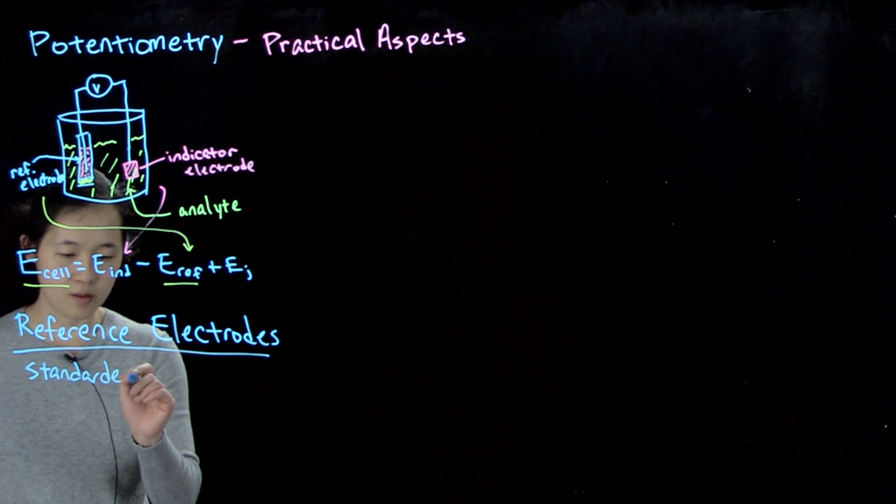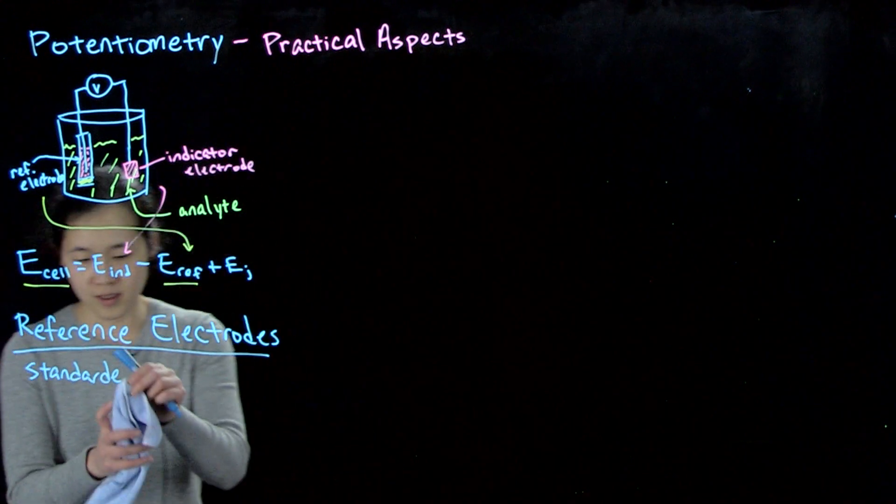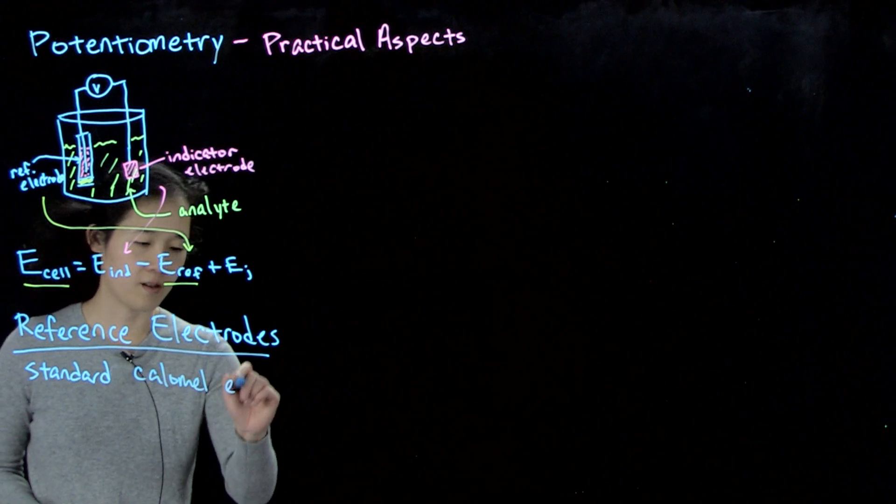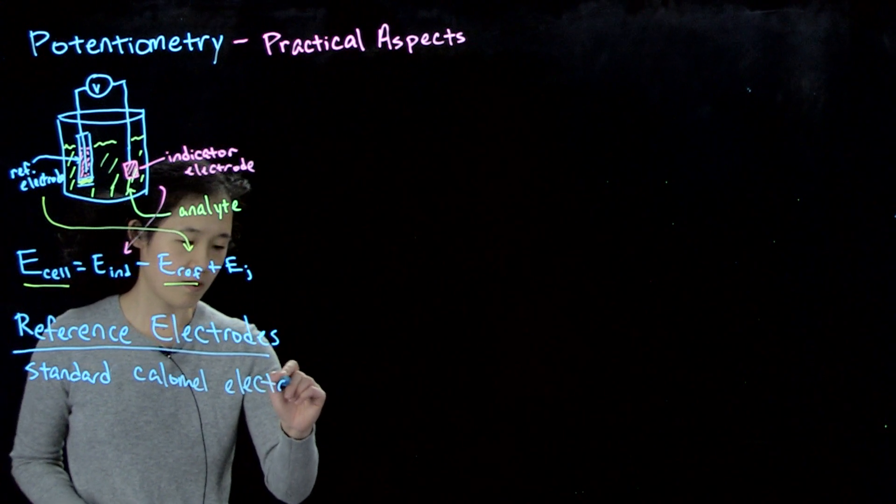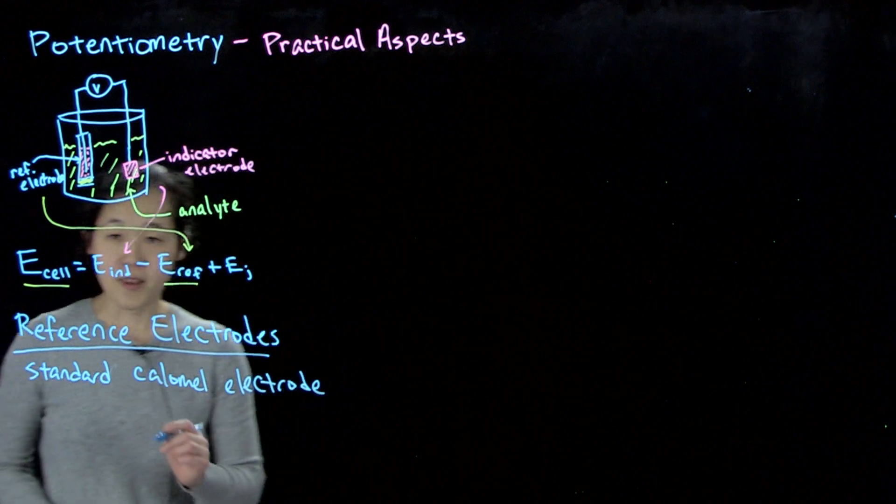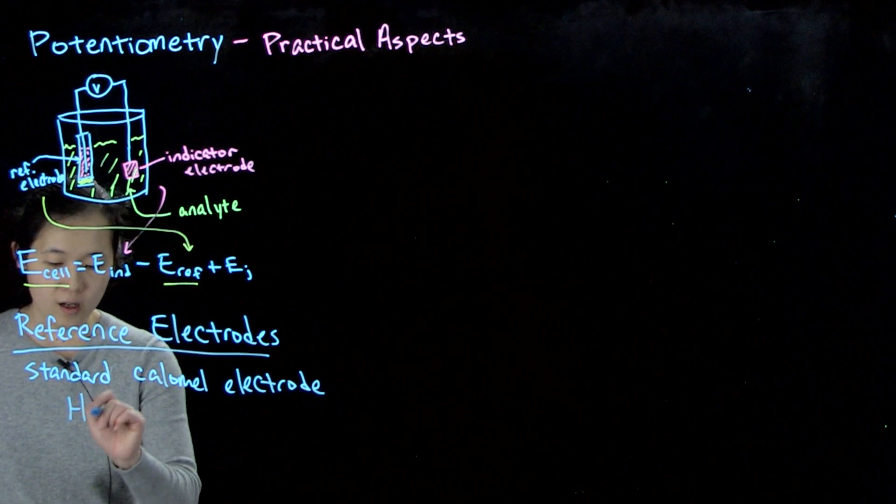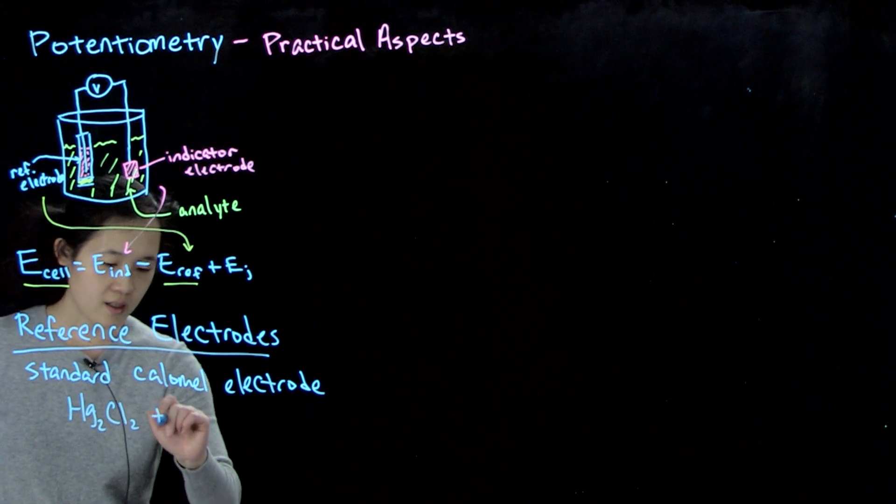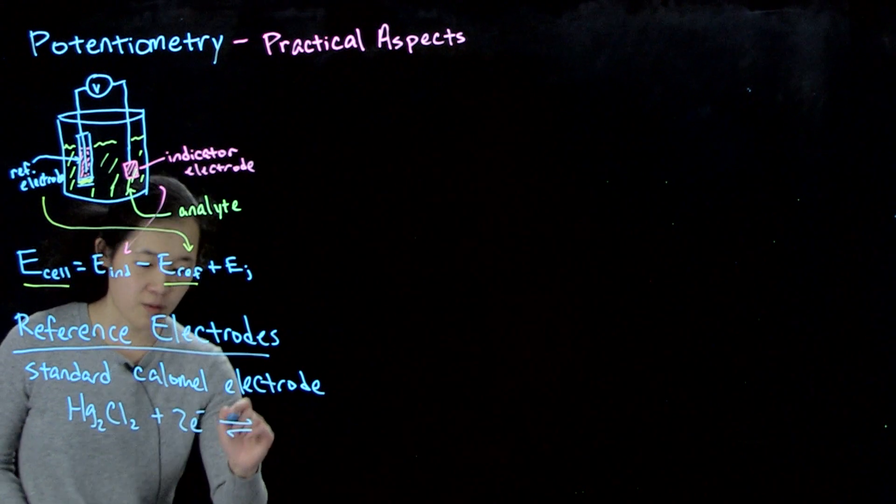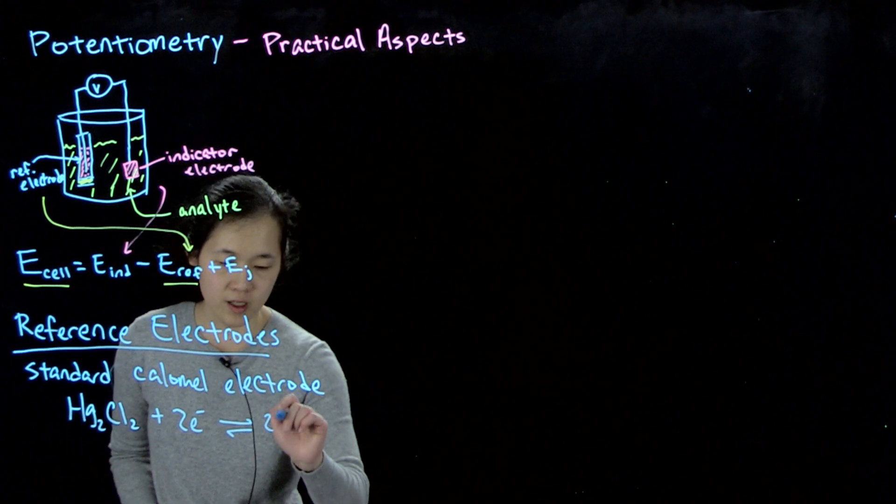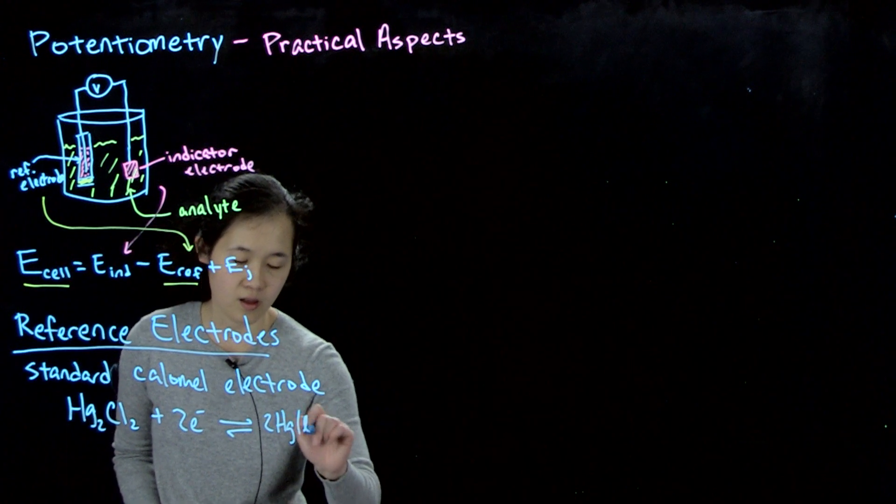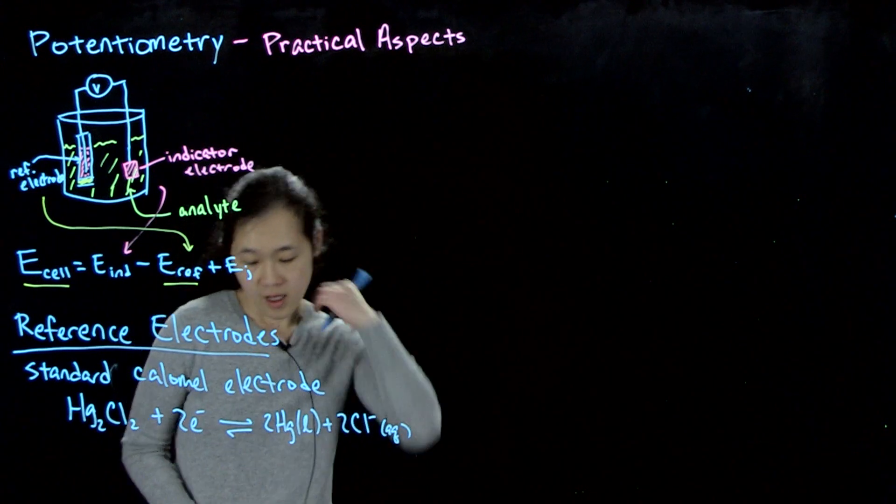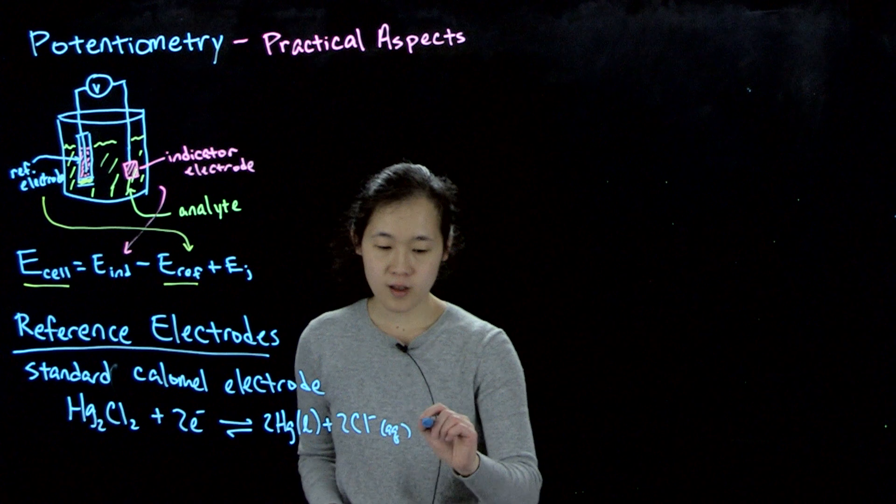So one really common one is a standard calomel electrode. And this uses mercury chloride. So if we start off with mercurous chloride, add two electrons, and then this will be in some sort of equilibrium with liquid mercury and chloride ions. And then, so this has a known potential.